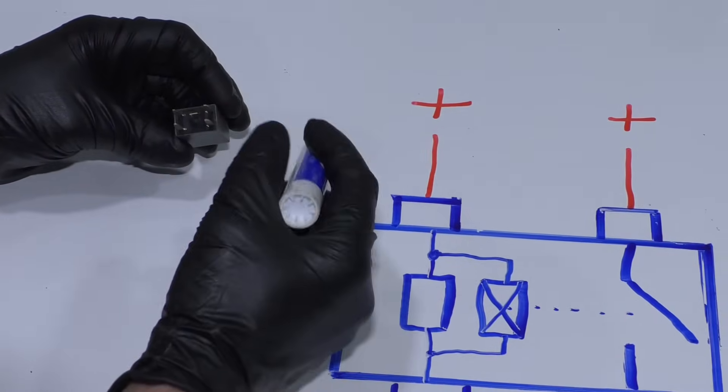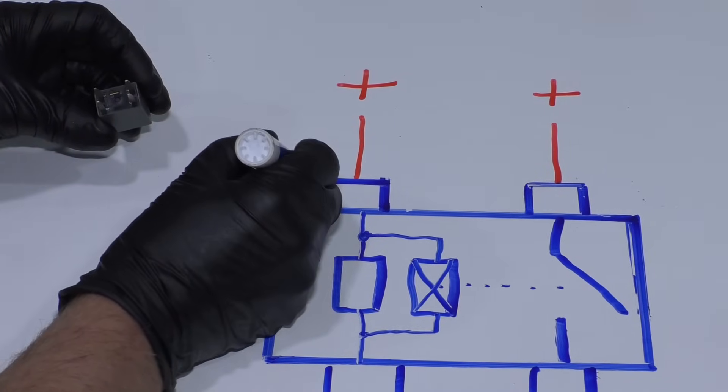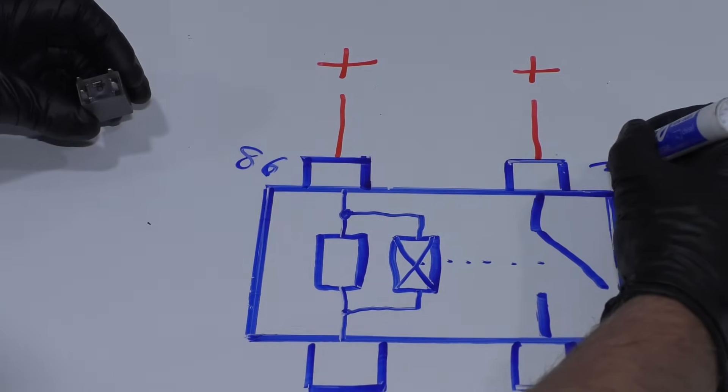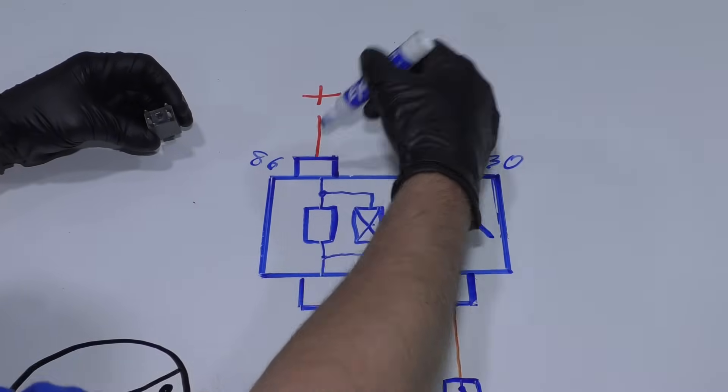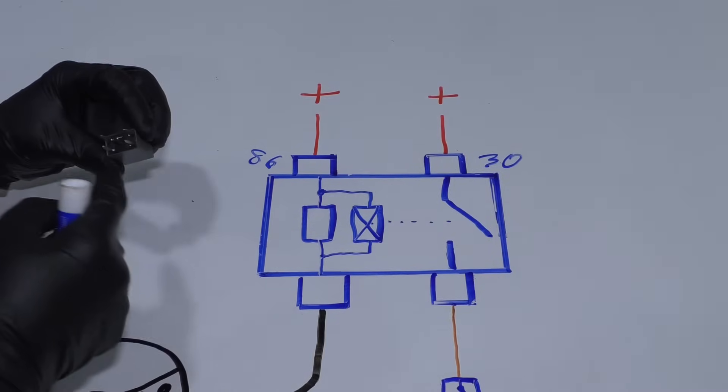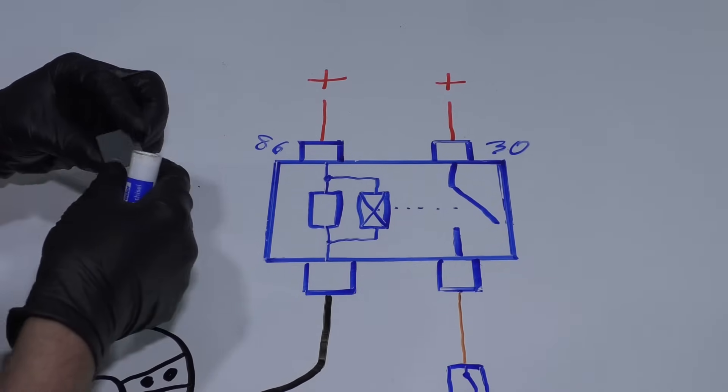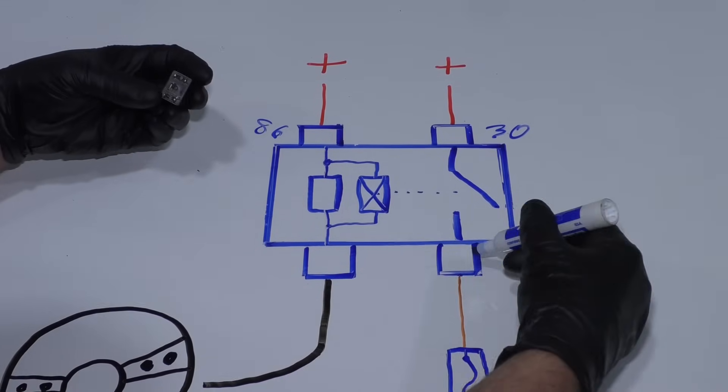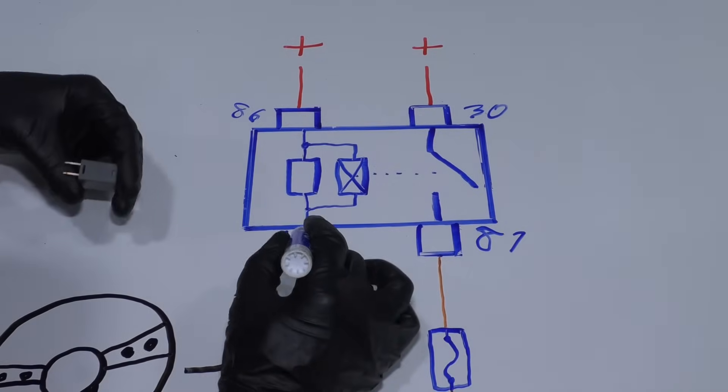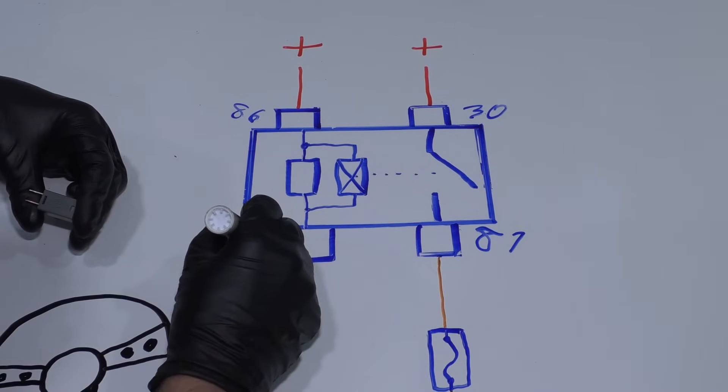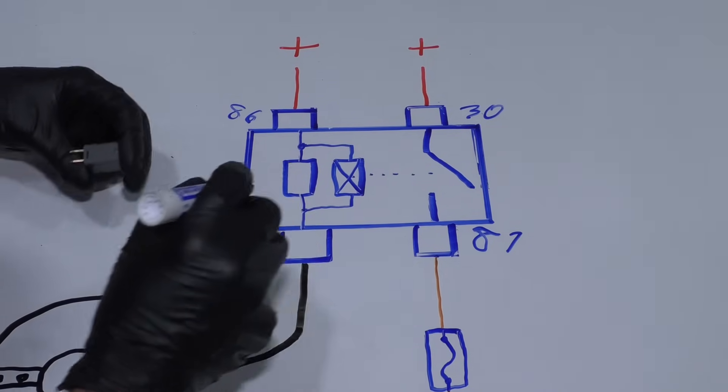So these two terminals represent 86 and 30, and there is battery positive on those terminals all the time. And then the other two terminals, this terminal represents 87, and this terminal right here represents 85. We'll talk more about the numbers later.